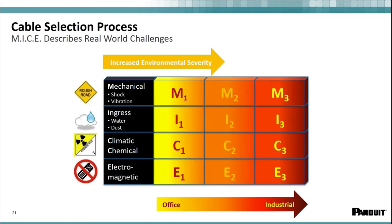MICE ratings are derived from the TIA-1005 standards. MICE describes the real-world environment. The four areas of the MICE evaluation are: M for mechanical, I for ingress, C for climatic and chemical, and E for electromagnetic. MICE is used to rate the environment, not the product — that's a really important thing to understand. The result of the MICE evaluation is used as a benchmark to compare product specifications to. Each product used in the system should be at least equal to or exceed the MICE evaluation for that space.